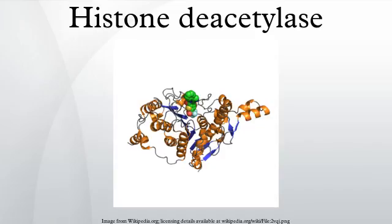It is a mistake to regard HDAC solely in the context of regulating gene transcription by modifying histones and chromatin structure, although that appears to be the predominant function. The function, activity, and stability of proteins can be controlled by post-translational modifications. Protein phosphorylation is perhaps the most widely studied modification, where amino acid residues are phosphorylated by protein kinases or dephosphorylated by phosphatases. The acetylation of lysine residues is emerging as an analogous mechanism in which non-histone proteins are acted on by acetyltransferases and deacetylases, and it is in this context that HDACs are being found to interact with a variety of non-histone proteins — some of these are transcription factors and co-regulators, some are not.